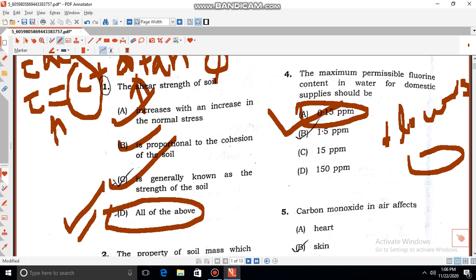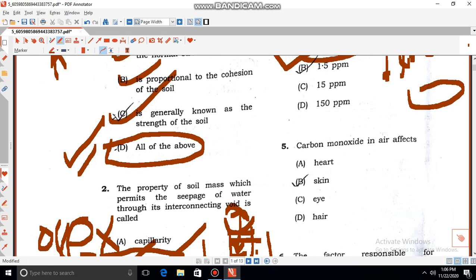So our correct answer is 0.15 ppm. Then, carbon monoxide in air - carbon monoxide, that is CO - if that is excessive, generally causes heart problems. So carbon monoxide causes heart disease. This is the correct answer.